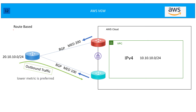Now let's talk about route-based VPN. As mentioned, you can have two active tunnels and it's up to you whether you want to route traffic over a single tunnel or both. On the customer end, you might have a router capable of handling asymmetric routing, or you might have a firewall that doesn't support asymmetric routing but supports symmetric — meaning inbound and outbound traffic must traverse the same tunnel.